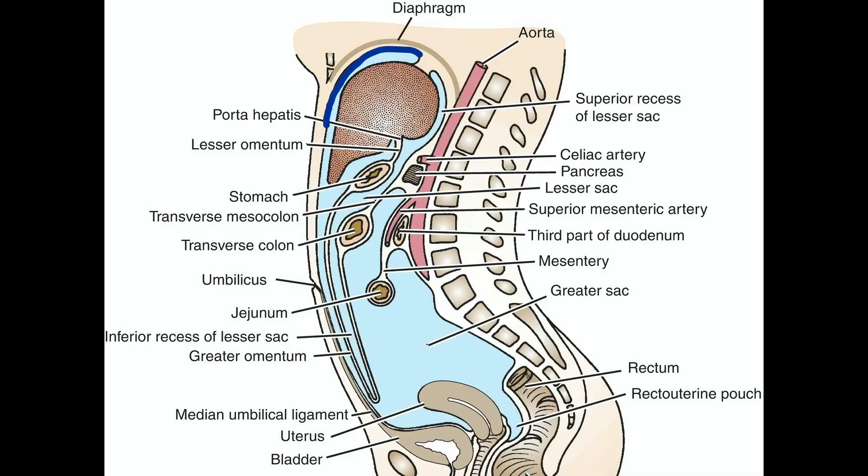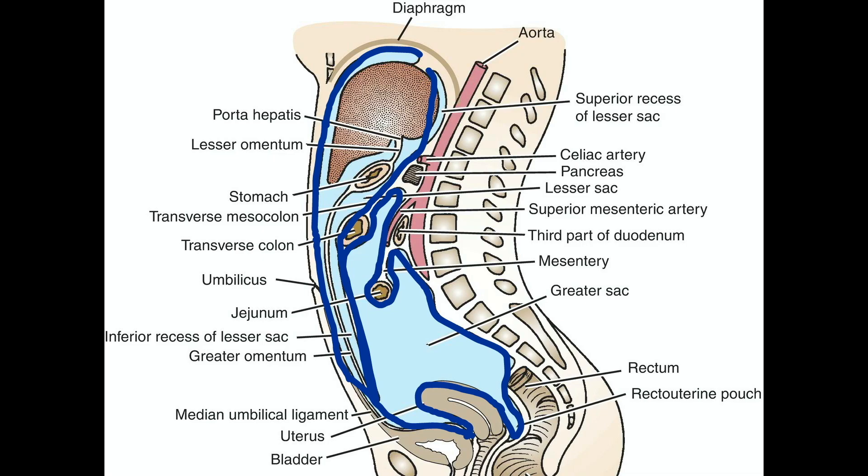The peritoneum is a thin serous membrane that lines the walls of the abdominal and pelvic cavities and clothes the viscera. It can be regarded as a balloon against which organs are pressed from the outside. The parietal peritoneum lines the walls of the abdominal pelvic cavity, while the visceral peritoneum covers the organs.